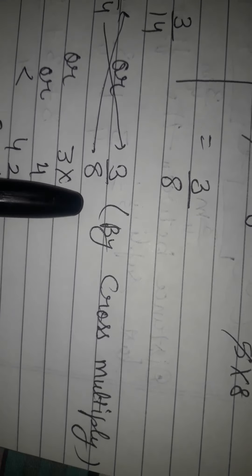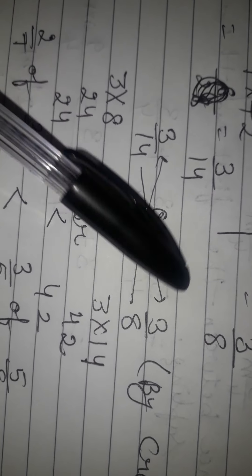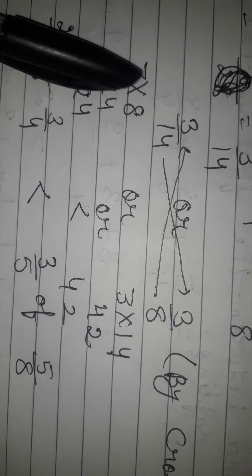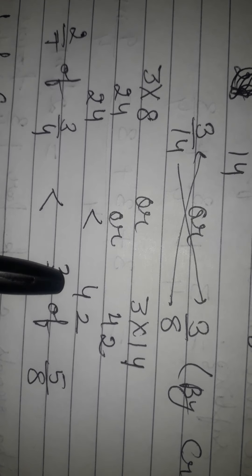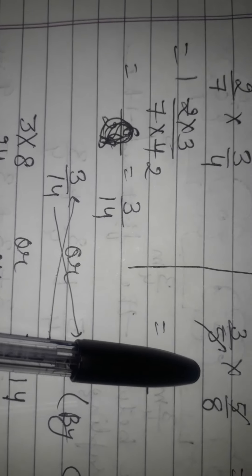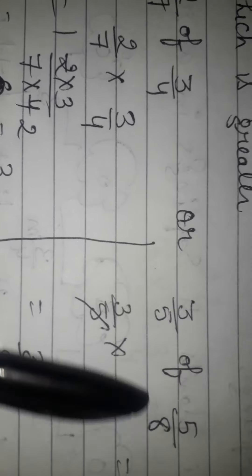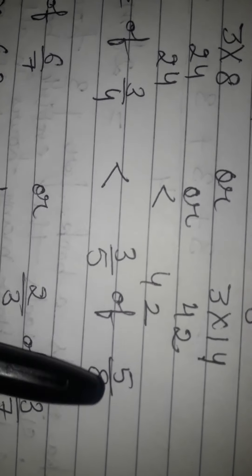To compare 3/14 and 3/8, we use the cross multiply method. 8 multiplied by 3 equals 24, and 14 multiplied by 3 equals 42. Since 42 is greater, the RHS side is greater. The answer is: 2/7 of 3/4 is less than 3/5 of 5/8.